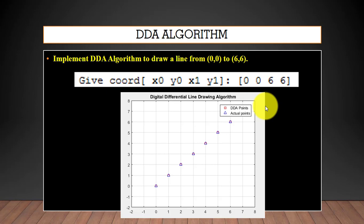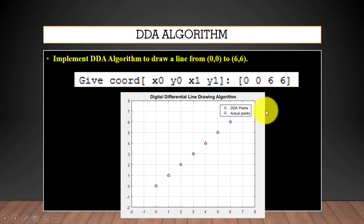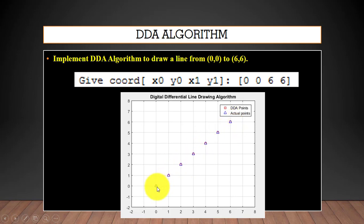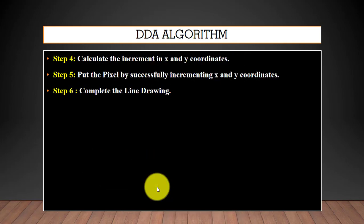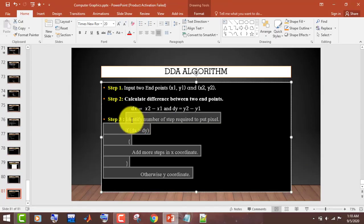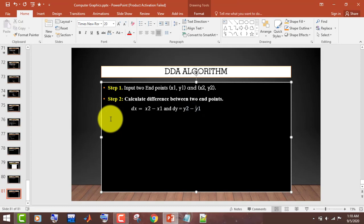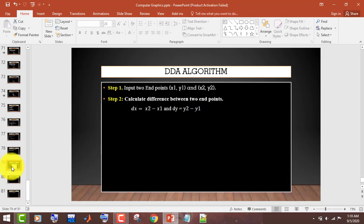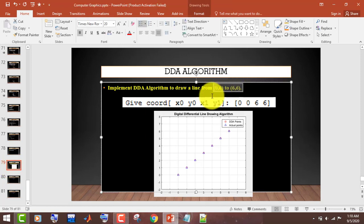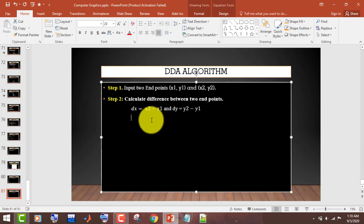For example, here we apply the DDA algorithm to draw a line from (0,0) to (6,6). We have the starting point x0,y0 = (0,0) and the endpoint x1,y1 = (6,6). You can see the values for these coordinates, and when you connect these points you can generate a straight line. So in the first step we are given the points (0,0) and (6,6).